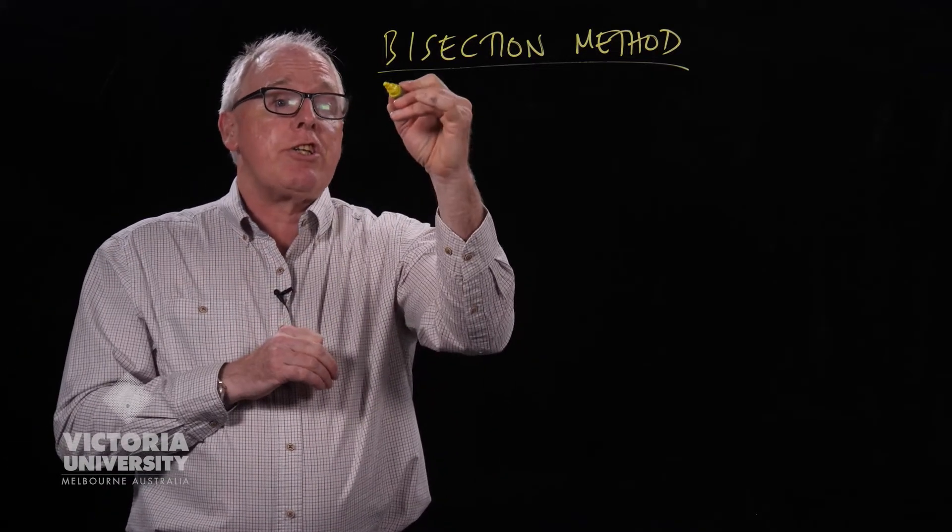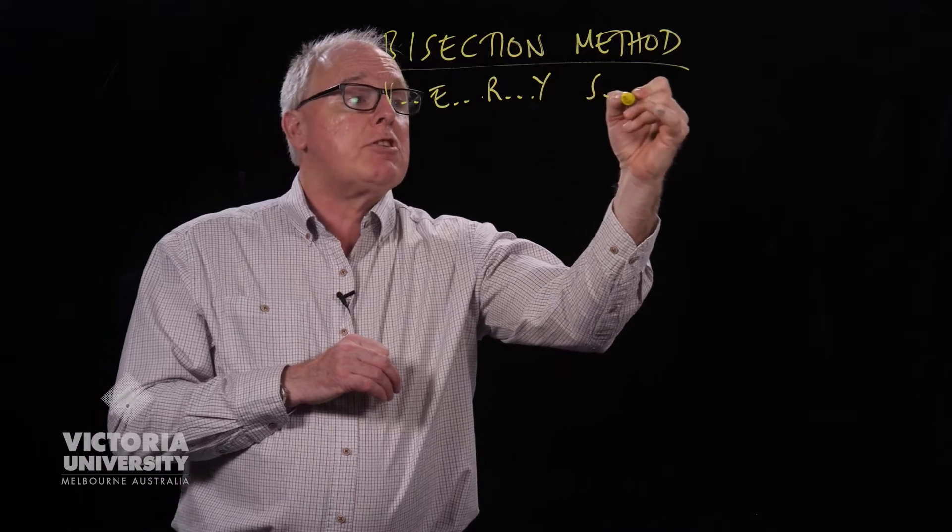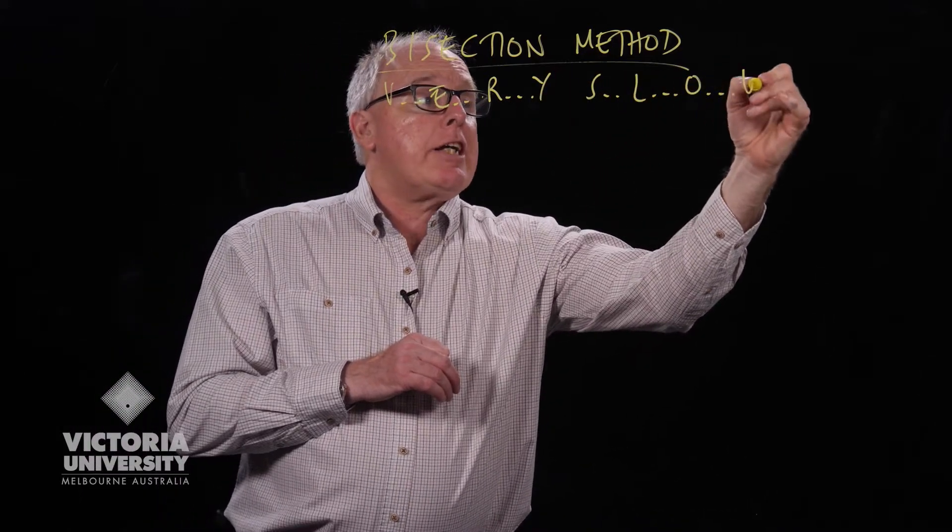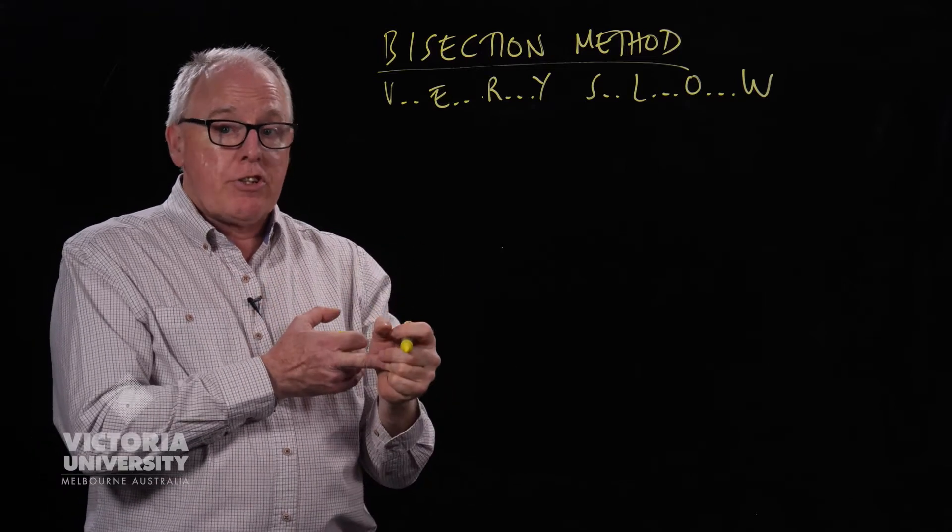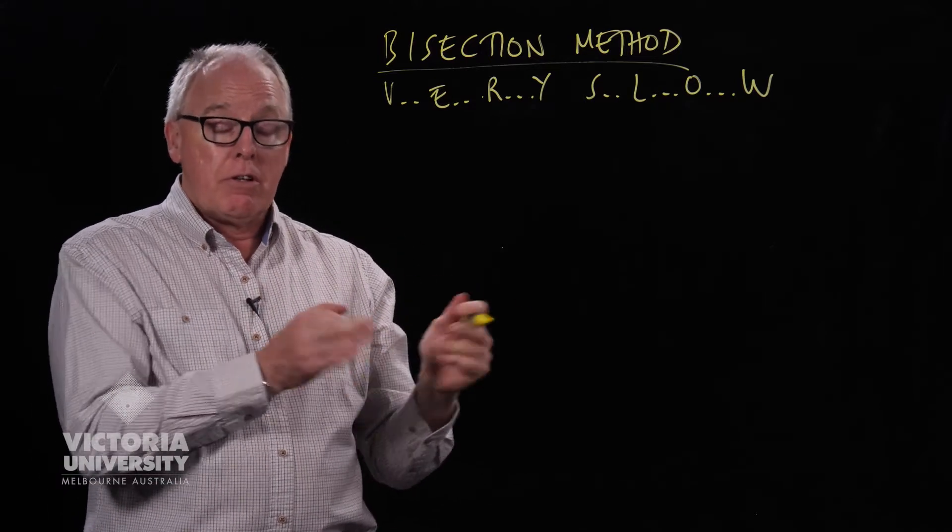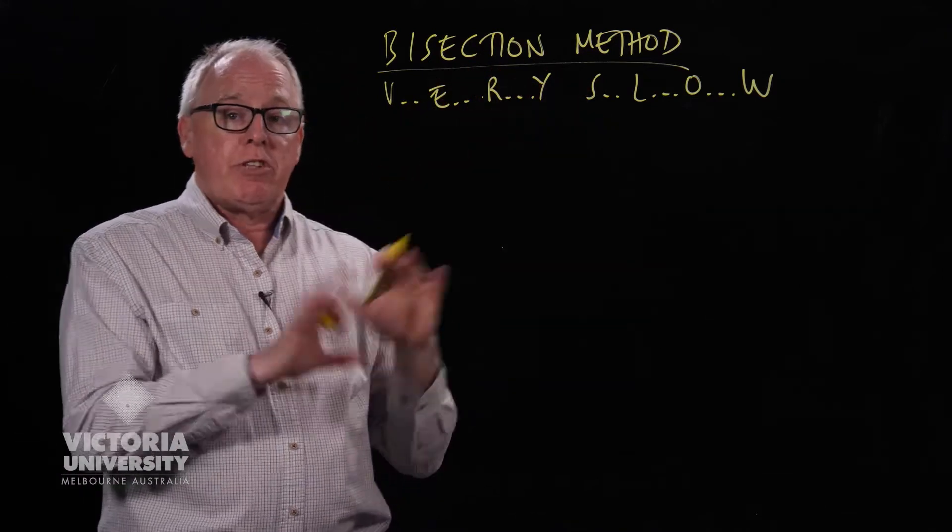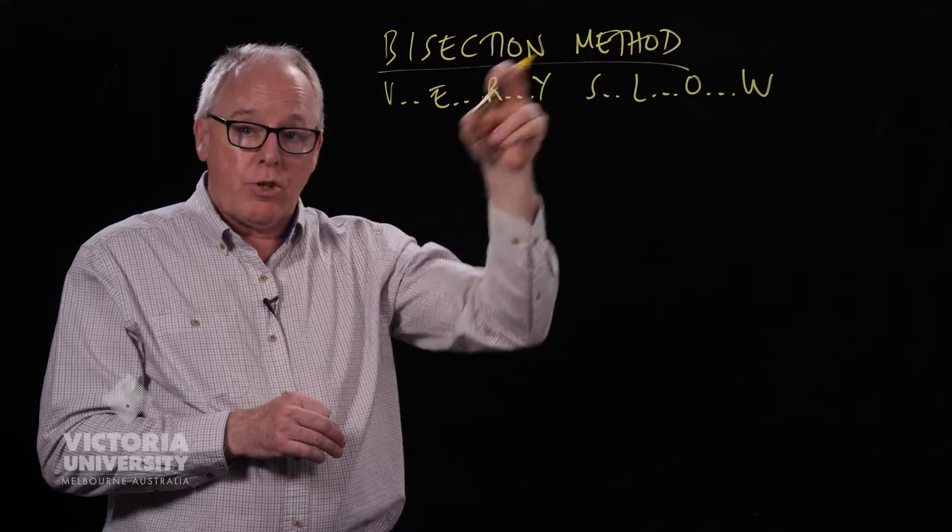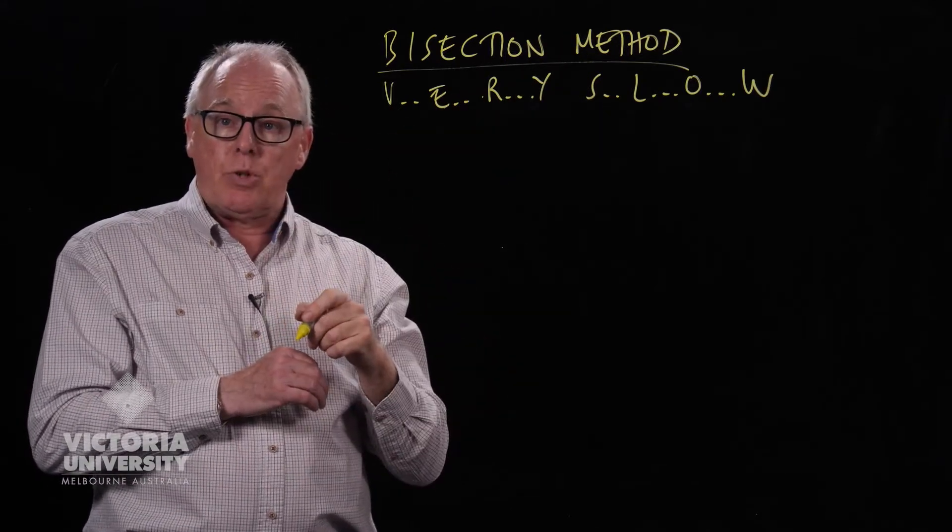It has the disadvantage that it's very slow. In fact, it is the slowest of all methods, but it has the advantage that it always works. We've seen Newton's method is incredibly fast but sometimes fails to work. The bisection method will always work, no matter what. As long as the function is continuous and crosses through the x-axis somewhere, the bisection method can be made to work.